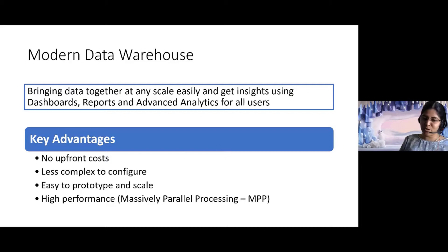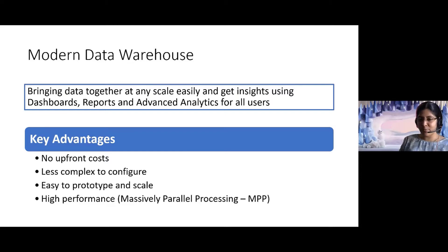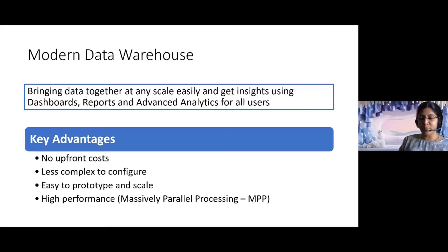When talking about modern data warehouses, especially if you're bringing in unstructured data, your infrastructure plays an important role in terms of where you store the data and if you want advanced analytics. With the cloud, you don't have large upfront costs — yes, you have OPEX, but you don't need more than a million dollars upfront for infrastructure. It's also less complex to configure — you jump onto the portal and configure things. Because there are no large upfront costs, you can easily prototype and scale. And with massively parallel processing capability, you can create high-performance data warehouses quite easily.